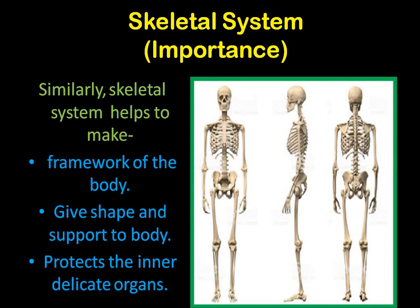Number one, it gives framework to the body. Then it gives shape and support to the body. All human beings have the same shape because they have the same type of skeleton. Animals' skeletons are different from the skeleton of human beings. But the skeleton helps to give the shape, support the body, and also protect the inner delicate organs.